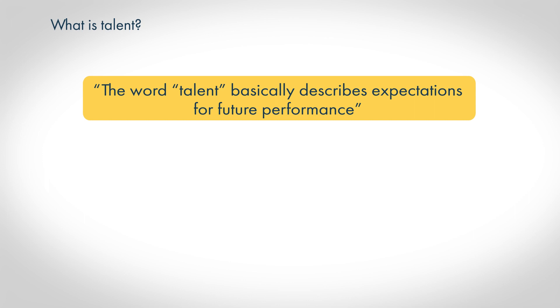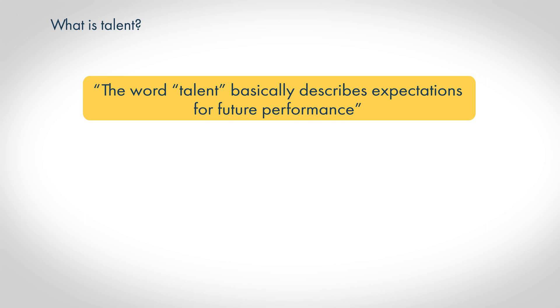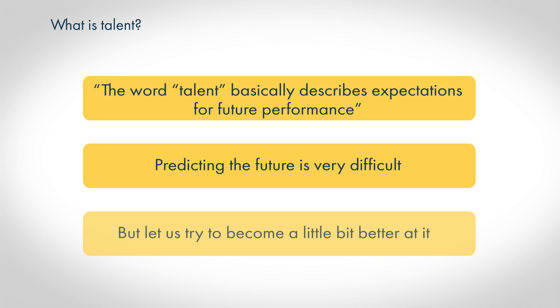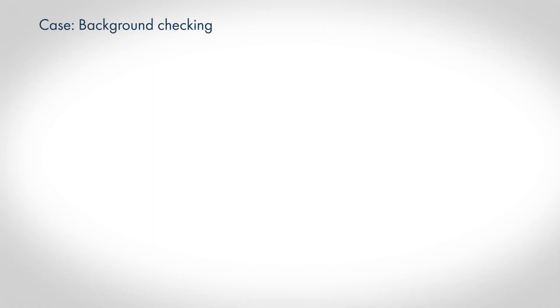When we talk about the word talent, we're describing an expectation for future performance. When a person is labeled a talent, we have some expectation that they can do something in maybe 10 or 15 years at a very high level. We are actually trying to predict the future, but this is very difficult. That's why we have to be careful about using the word talent, because it's connected to a lot of expectations. But if we have more understanding of how children develop — what can be learned and what cannot — we can become a little better at predicting the future.